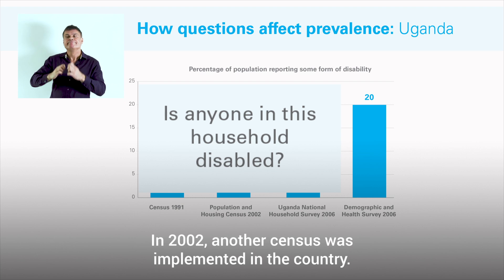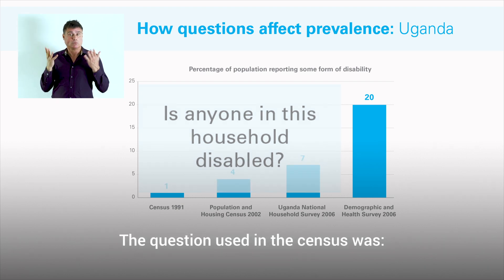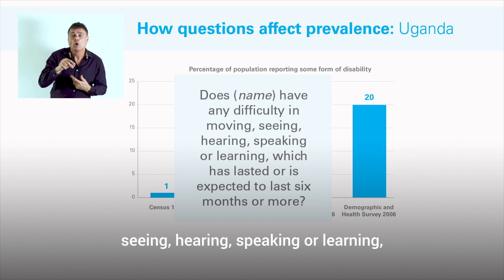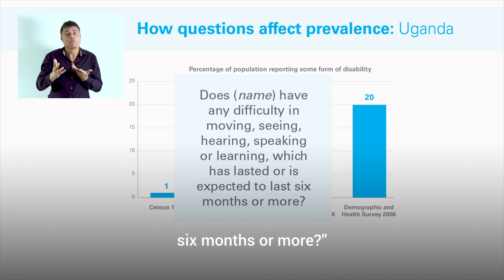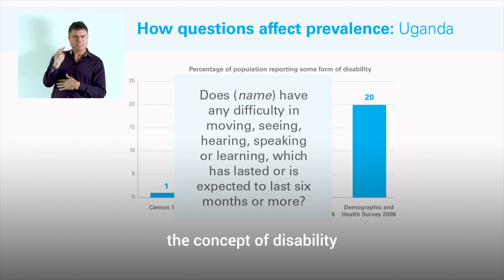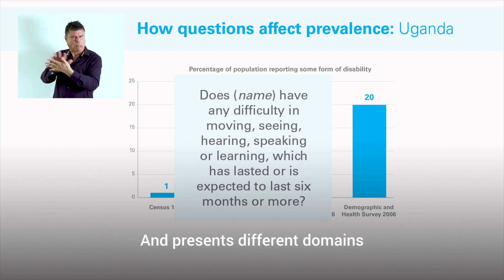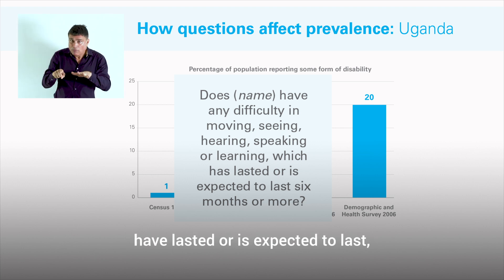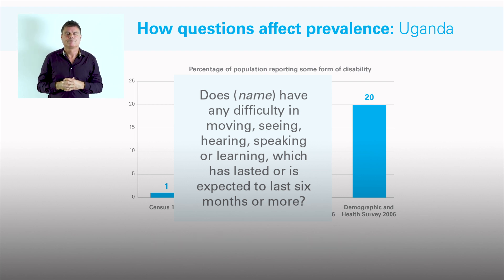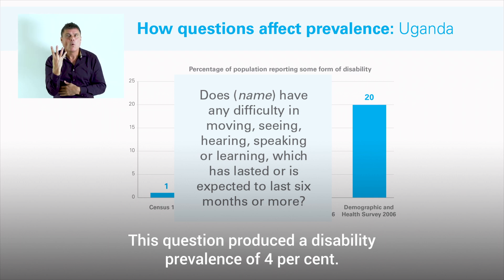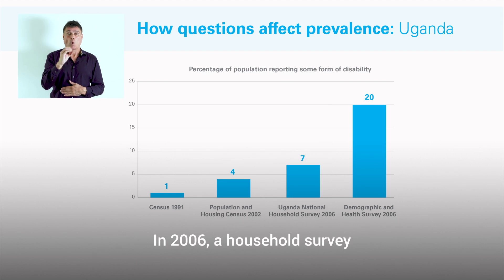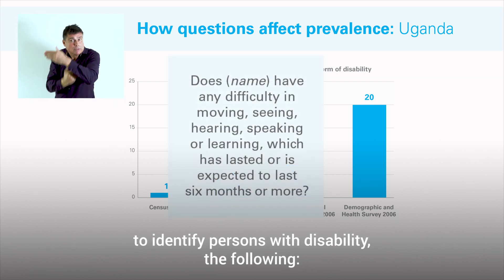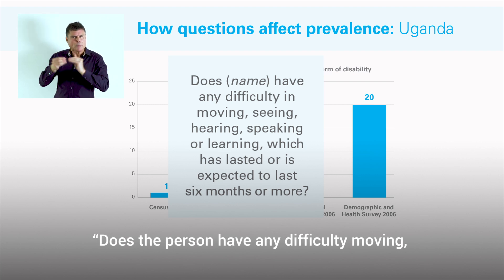In 2002, another census was implemented. The question used was: 'Does anyone have any difficulty in moving, seeing, hearing, speaking, or learning, which has lasted or is expected to last six months or more?' As you can see, the concept of disability was unpacked into different domains and specified a duration threshold. This question produced a disability prevalence of 4%. In 2006, a household survey was implemented using the same question from the 2002 census, but questions were asked about every single member of the household. The disability prevalence produced was 7%.